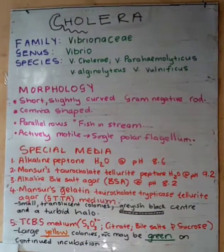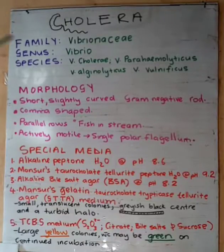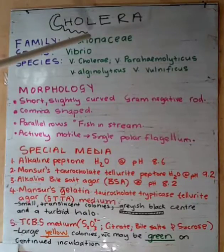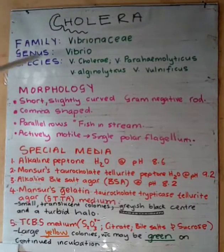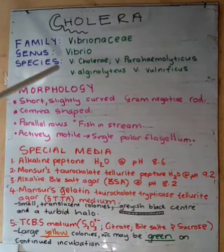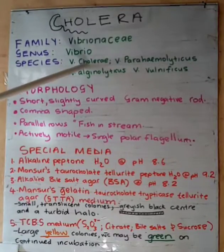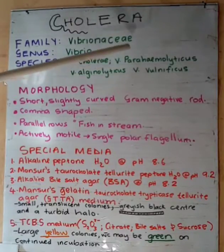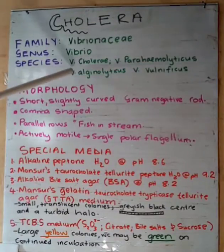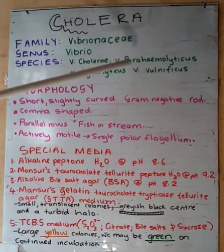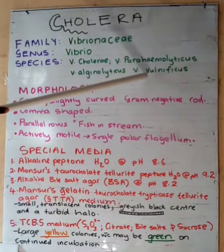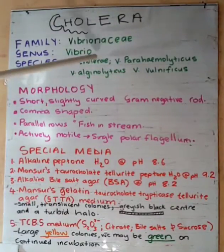Let's look at cholera. This bacteria is found in the family Vibrionaceae, in the genus Vibrio. The medically important species include Vibrio cholerae, Vibrio parahaemolyticus, Vibrio alginolyticus, and Vibrio vulnificus. The first two are very important.